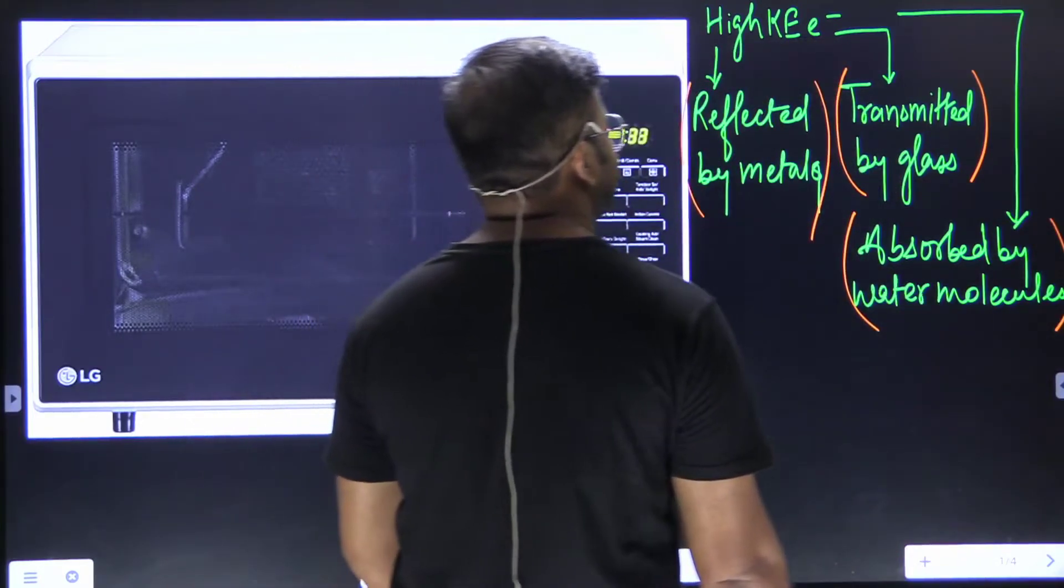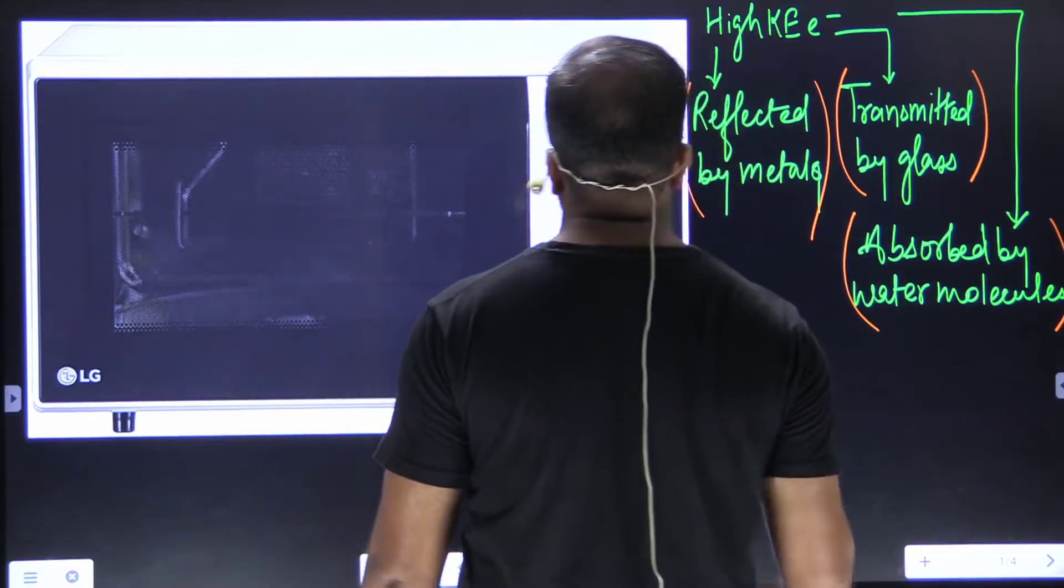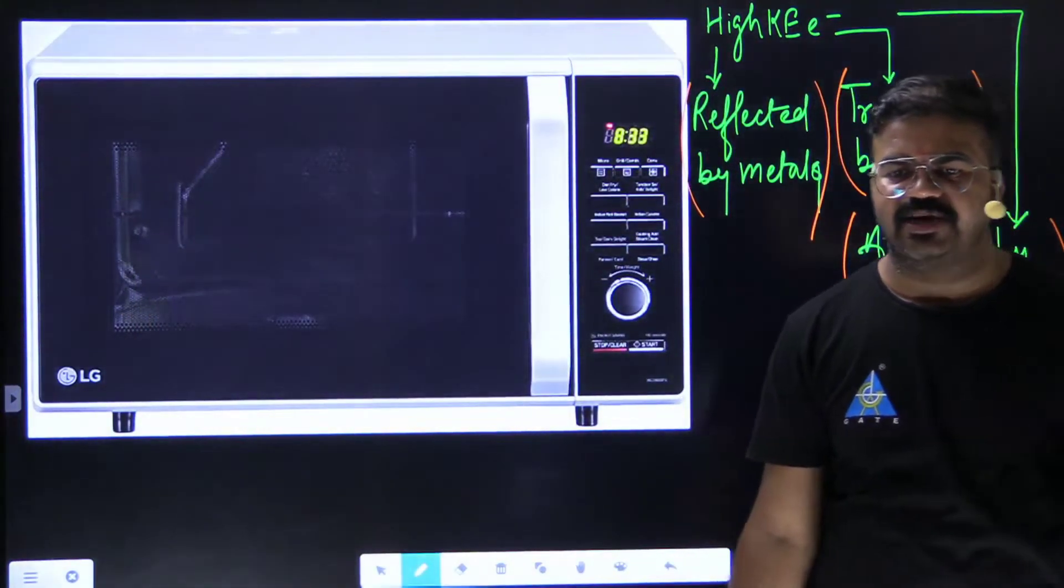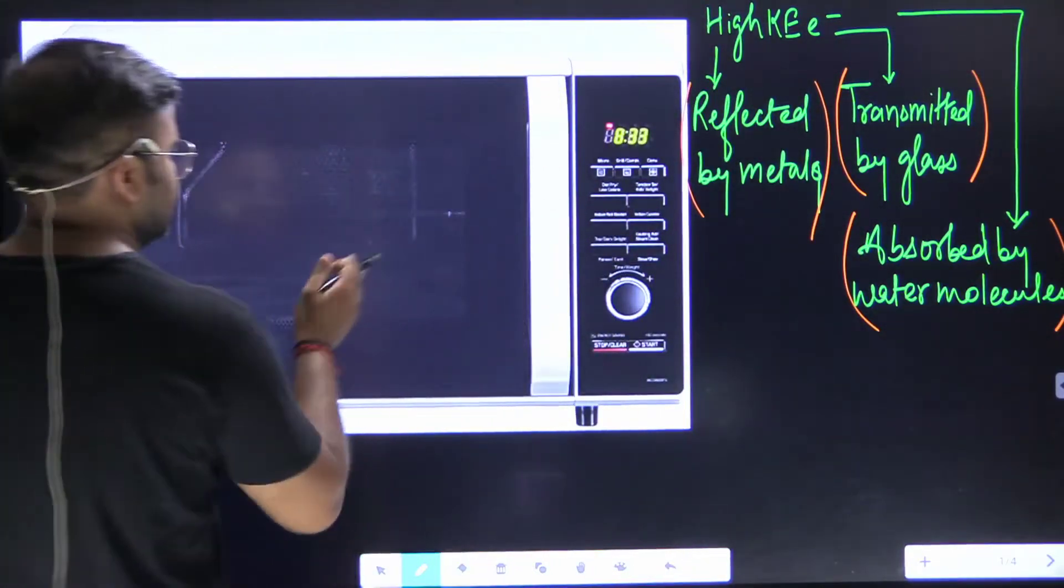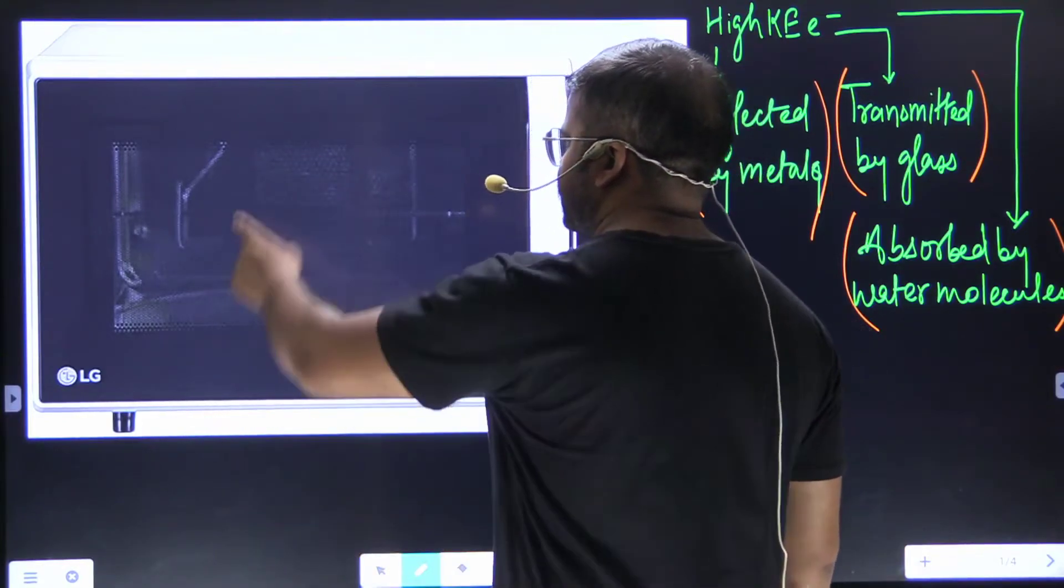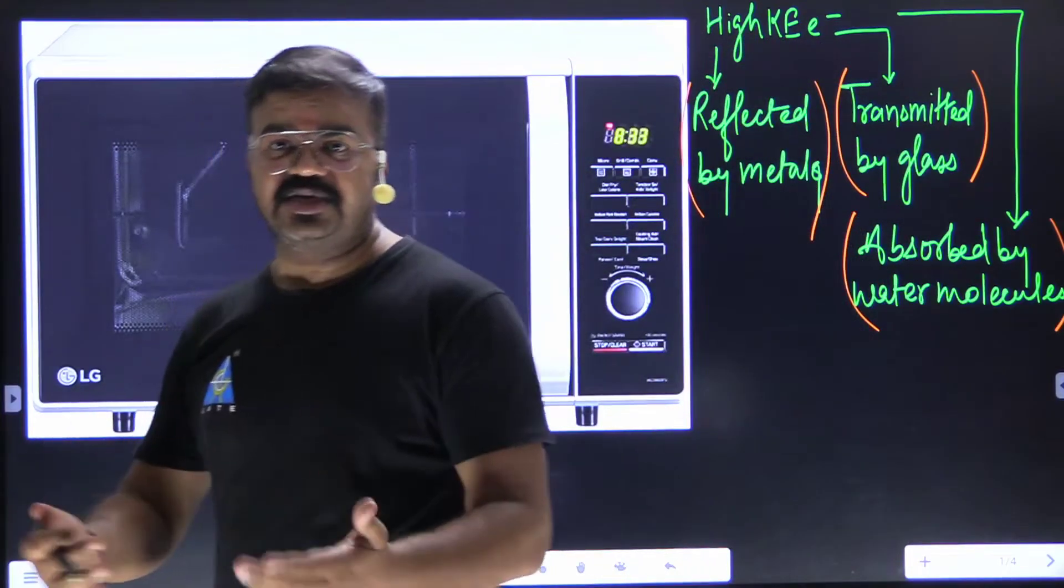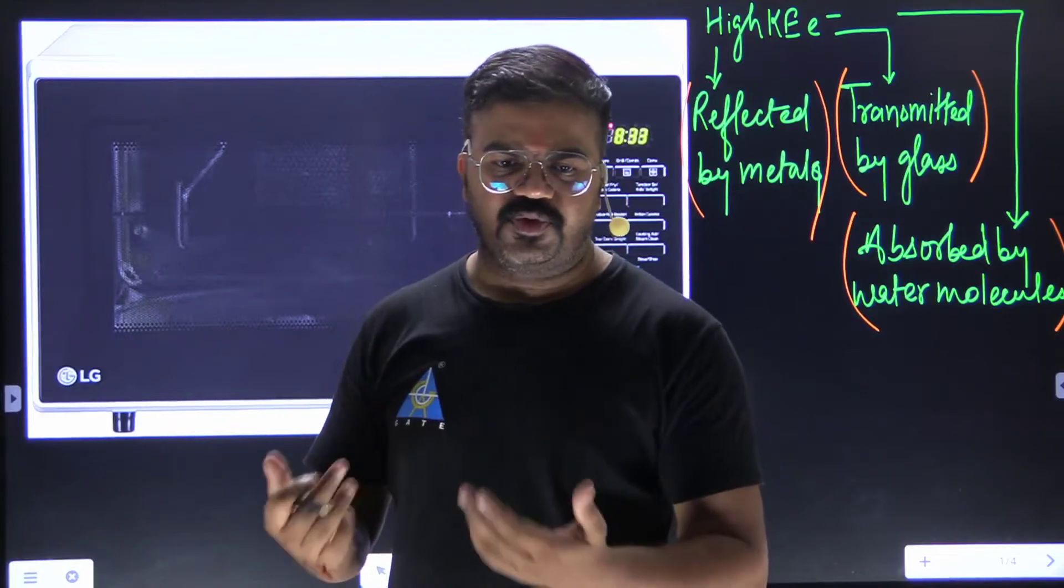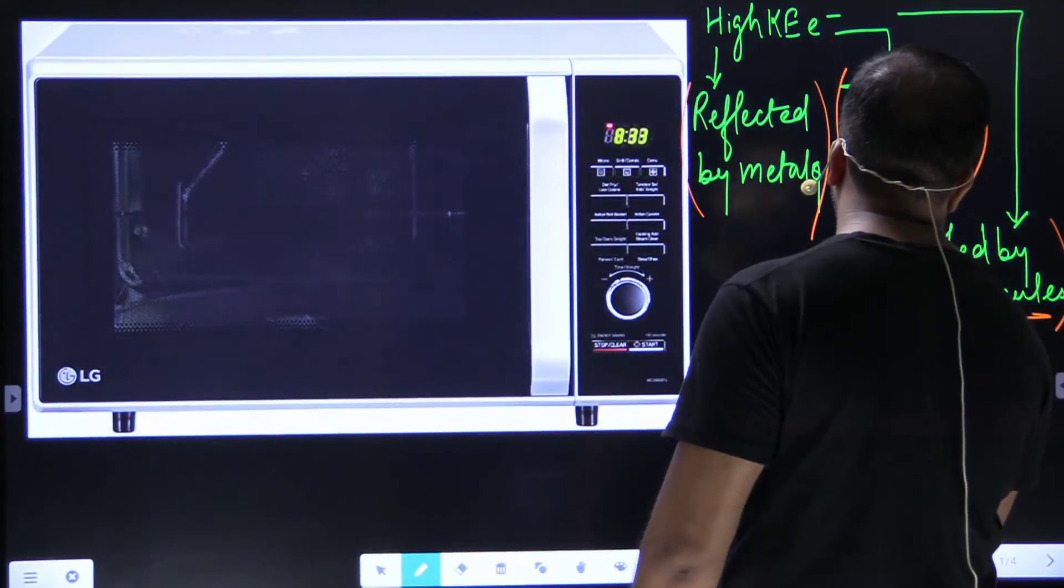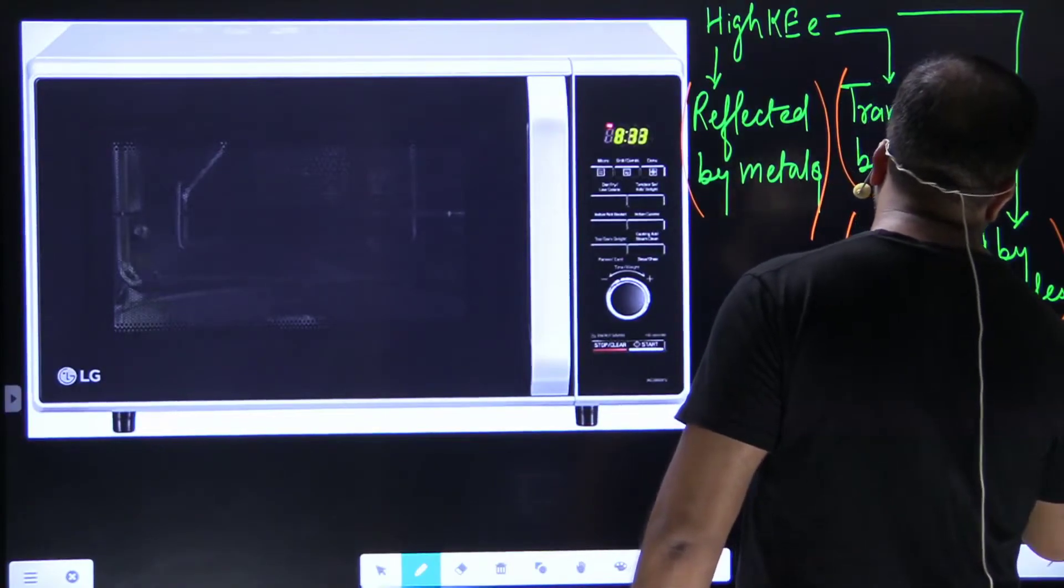So this is reflected by the metals, transmitted by the glass, and absorbed by water molecules. If it is reflected by the metals, transmitted by the glass, that is why internal side is made up of metals. If you have seen any microwave oven, inner box is made up of metals. Glass is there to check whether what is happening inside, but it is given a coating, black coating, so that the electrons are not transmitted out. If they are transmitted out there will be a loss and we don't want loss to happen. And they are absorbed by water molecules or food, basically food is either solid or semi-solid.